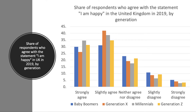This chart, again from the happiness survey, shows the share of respondents who agree with the statement 'I am happy' in 2019. It turns out that millennials have the highest strong agreement, followed by Generation Z, then the baby boomers, then Generation X. Baby boomers are people born between 1946 and about 1965, the post-war World War II baby boom. Generation X, typically born from the mid-1960s to the late 1970s — they would be in their early 50s now.